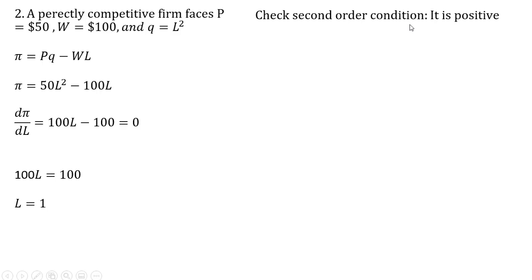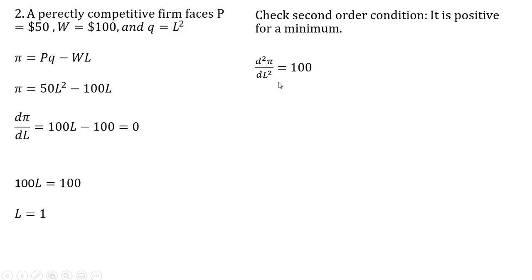Let's check our second order condition here. It is going to be positive. So we're actually going to be at a minimum here. So our second derivative here, the derivative of 100L minus 100 is just 100. And because this is greater than zero, we're actually at a minimum. We're at a local minimum here.